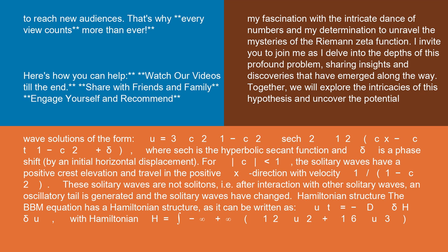For c < 1, the solitary waves have a positive crest elevation and travel in the positive x direction with velocity 1/(1-c²).